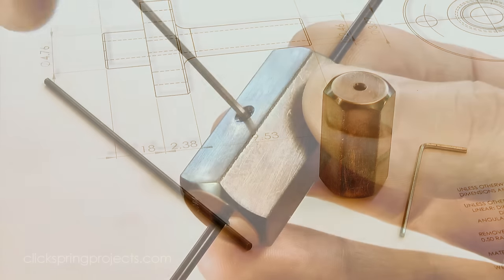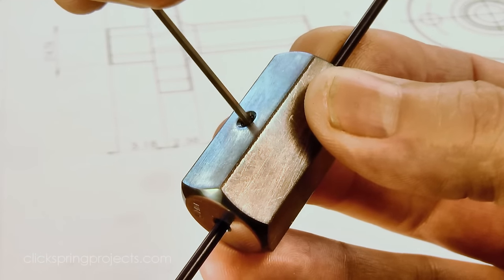Starting with a new piece of blued pivot steel, I've loaded it into this simple holder that gives me a quick way to index for 3 sides.